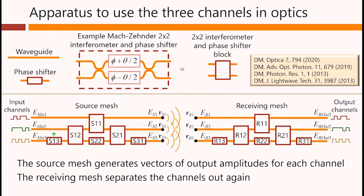What this source mesh can do is it can take an individual input channel and construct an arbitrary vector of output amplitudes, here just shown as light emerging directly from waveguides. And similarly, this second input here can construct another orthogonal vector of amplitudes that come out here, and so on for the third one.